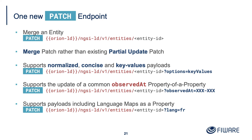Merge patch supports the update of a common observedAt — so if you want to indicate all the information you're pushing was at a particular timestamp, you put observedAt and the ISO date as a query parameter and it will update the values accordingly. It also supports language maps as a property. I'll look into the details in a second.